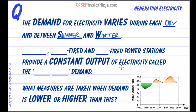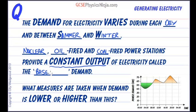To cope with this fluctuation in demand, we first use nuclear, oil-fired, and coal-fired power stations, and these provide a constant output of electricity called the base load demand. If we look at our graph of electrical power demand through the day — going from early morning through to lunchtime and back to early morning again — we can see that the dotted line represents the base load demand.